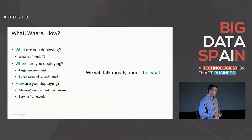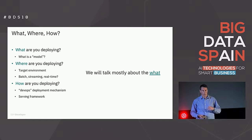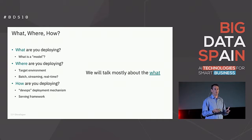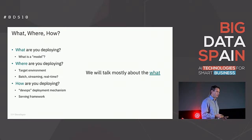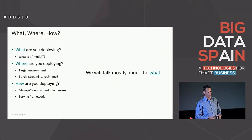Machine learning deployment covers three important questions: what are you deploying — what is the model? Where are you deploying it — what is the target environment, the runtime? Is it for batch inference, streaming inference, real time, or a combination? And how are you deploying it — the DevOps deployment mechanism, the details about how you're taking that model and putting it into production and serving frameworks. We're really going to focus more on the what today, and perhaps a little bit about the how.